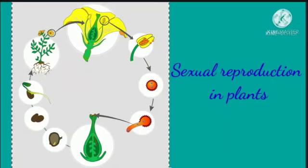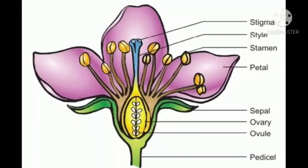Before we discuss sexual reproduction in plants, let us recall the parts of a flower, as sexual reproduction in plants takes place in the flowers. Parts of a flower: First,